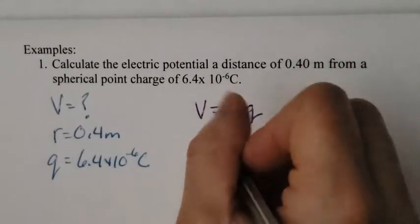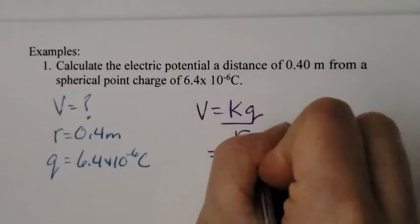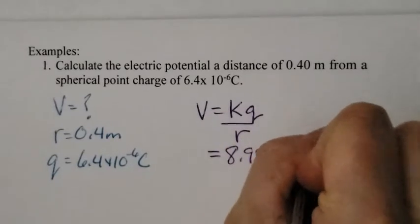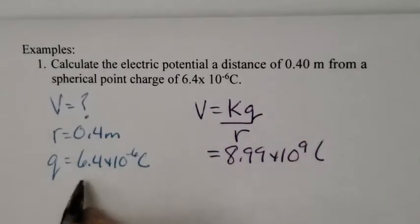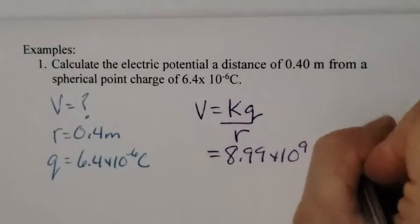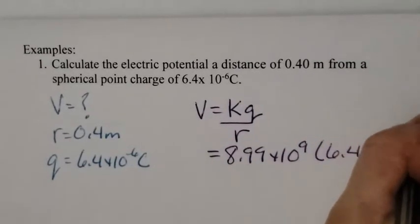K is a constant, that's just 8.99 times 10 to the 9. Q I have right here is 6.4 times 10 to the negative 6.